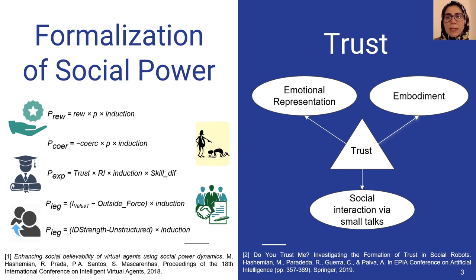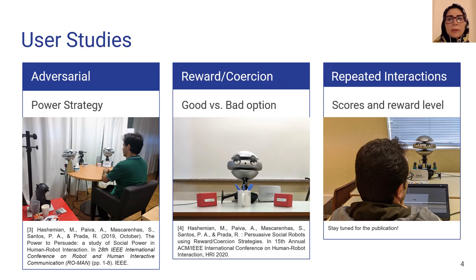So in the second step, we attempt to identify the important factors influencing trust in social robots. Using the lessons learned from these two initial steps, we then started designing different user studies to investigate the effect of social power on persuasiveness of social robots.